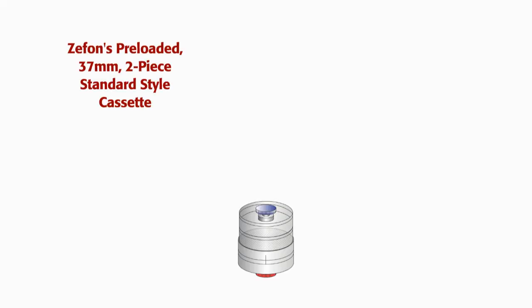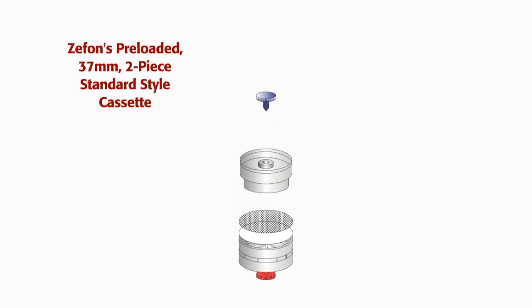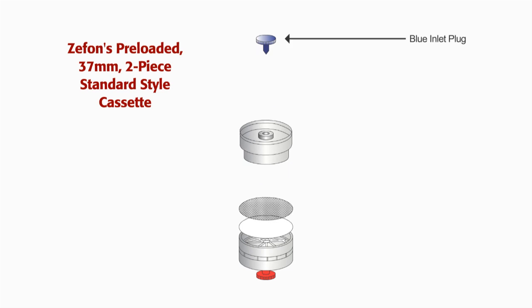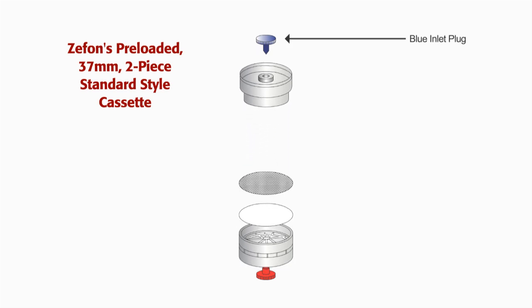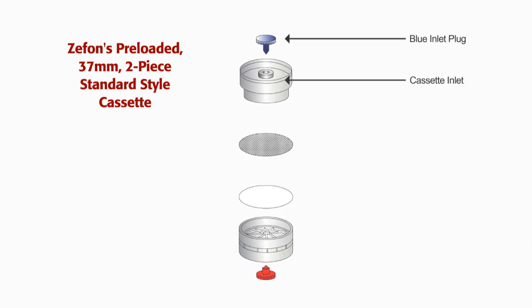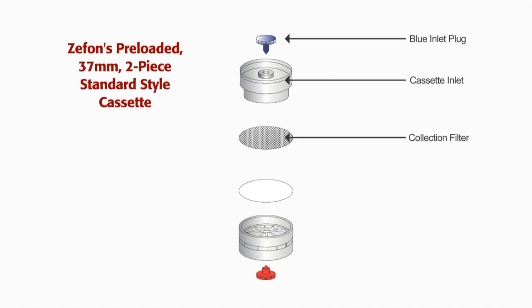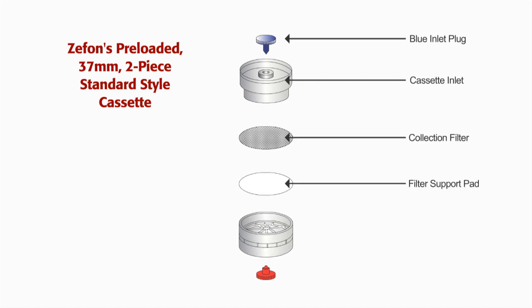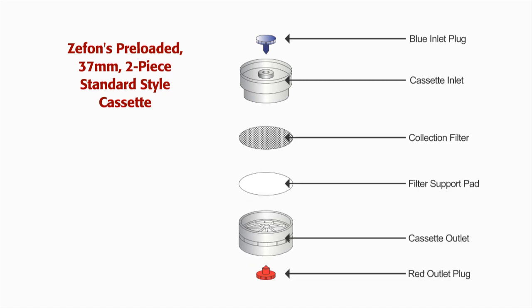Zefon's preloaded 37mm two-piece standard style cassettes are configured with a blue inlet plug, a cassette inlet, a collection filter, a filter support pad, and the outlet cassette.